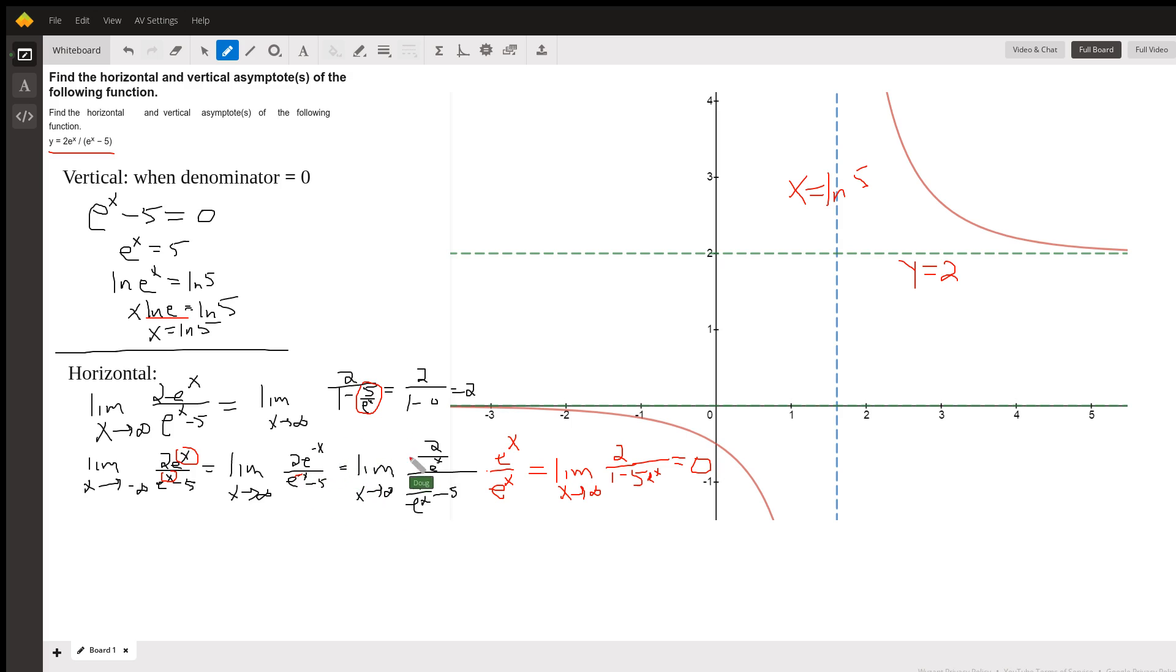And then rewrite the function with positive exponents. So 2e^(-x) is 2e over e^x, and e^(-x) is 1 over e^x. You could stop right here if you wanted to and realize that